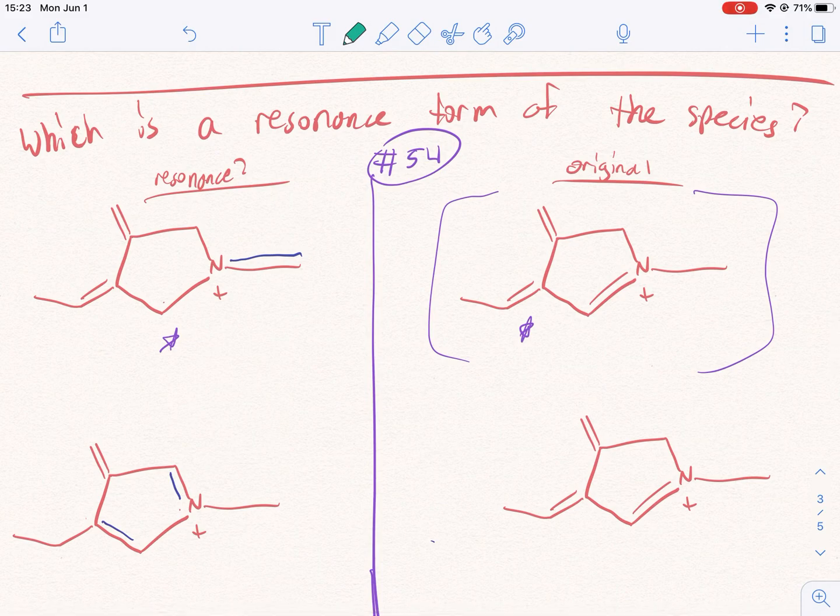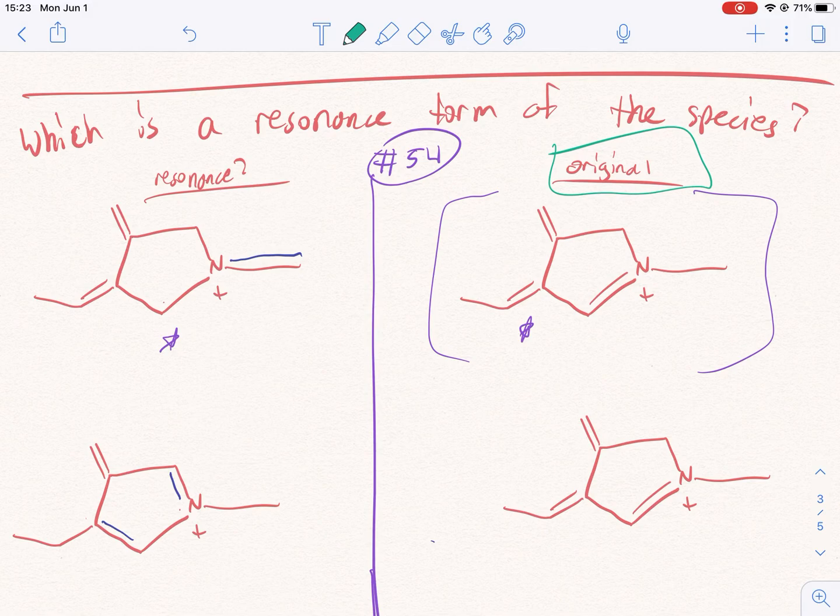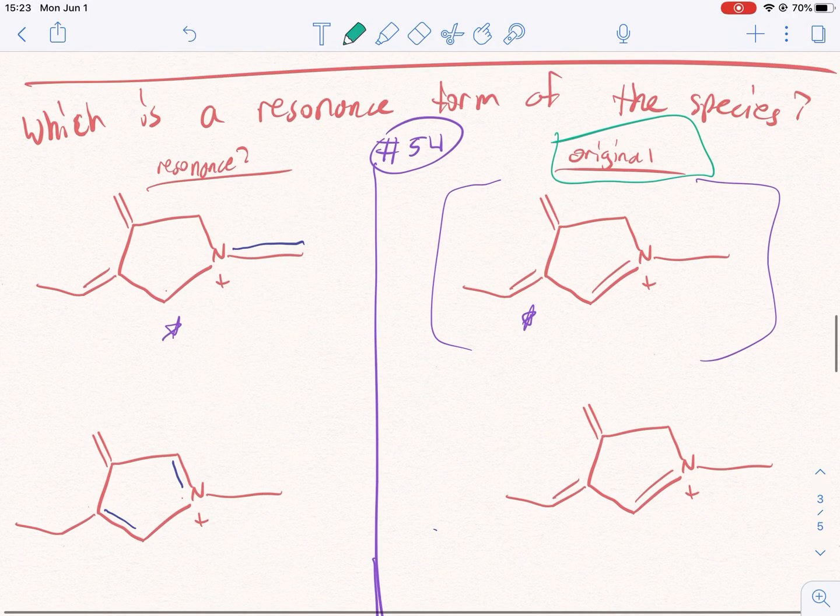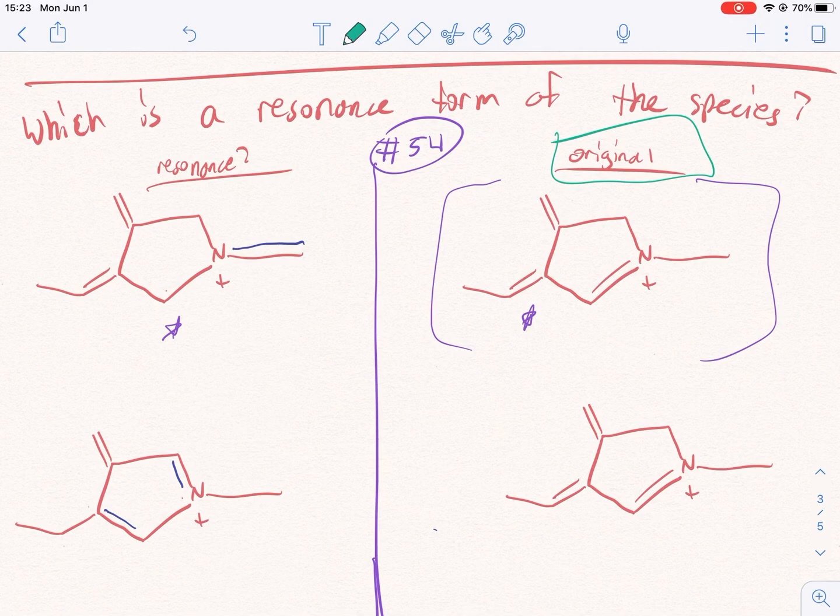OK, so this is asking what is the resonance form of the species? Species meaning the original molecule - it's a weird term for chemistry. But when they say species, just think of these organic molecules as different species, different types of things. We got the original, we got the supposed resonance form. So I always urge you with these questions to start with the original and move bonds around to try and make the one you're comparing it to. So let's look.